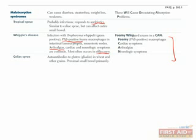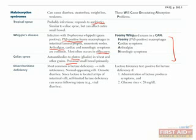Since PAS stain is only positive in a relatively small subset of other diseases, this can be a huge giveaway. Assume the patient will be a middle to older aged white male. Celiac sprue — covered shortly — but the most basic information is that autoantibodies to gluten or gliadin form and cause symptoms when patients eat wheat or certain grains, and it's usually limited to the proximal small bowel.